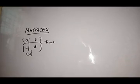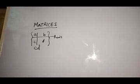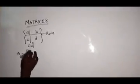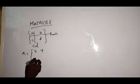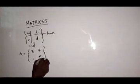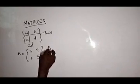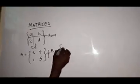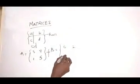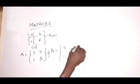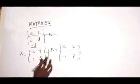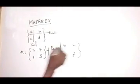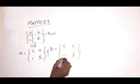Going to addition of matrices. Let's say I have a matrix A equals to 3, 4, 1, 5. And I have a matrix B. We are doing addition of matrices — let's say matrix B is 5, 2, minus 1, 7. So if I'm doing A plus B, A plus B simply means row plus row, column plus column.